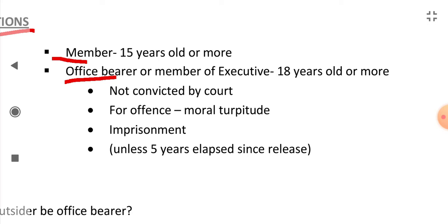The minimum age requirement to be a member of a trade union is 15 years. A person should be 15 years old or more to be a member. To be an office bearer or member of the executive of a trade union, he should be at least 18 years old.